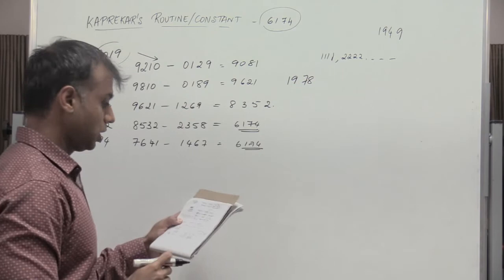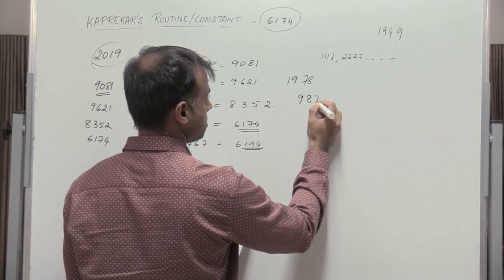So again write the number in the descending, largest to smallest: 9871 minus 1789. So we get 8082.